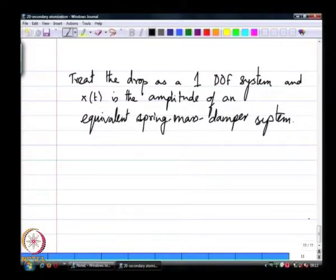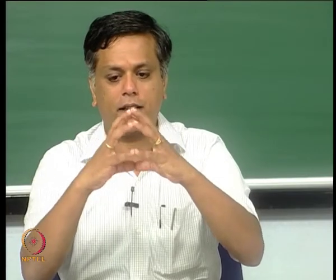This is an amplitude response to an equivalent spring-mass-damper system. You can think of the drop — the moment I have perturbed the drop, we know from videos that it is going to undergo oscillations. If I impart an impulse forcing to the drop, it is going to oscillate and then come to rest. The reason for the damping is due to the liquid viscosity.